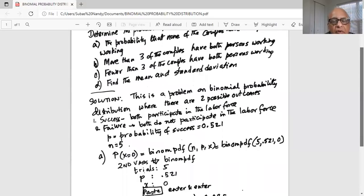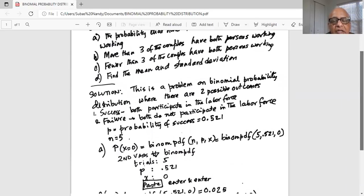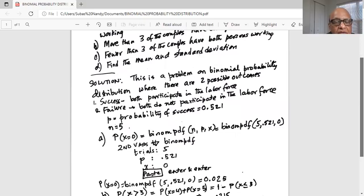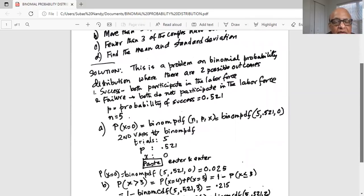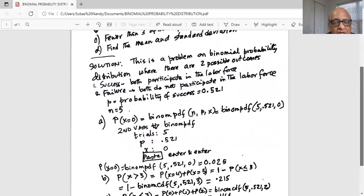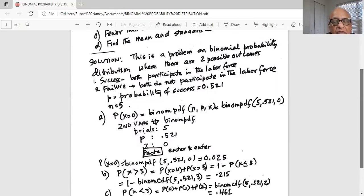So we go to second vars in our calculator. Press the second button, then the vars key, and then scroll down to binom pdf. First thing it asks is trials, that is the sample size, n equals 5. P, small p, is the probability of success, 0.521. X, none of them are participating in the labor force, x is zero. Scroll down to paste and hit enter twice. So P(x=0) is binom pdf (5, 0.521, 0) and that equals 0.025.